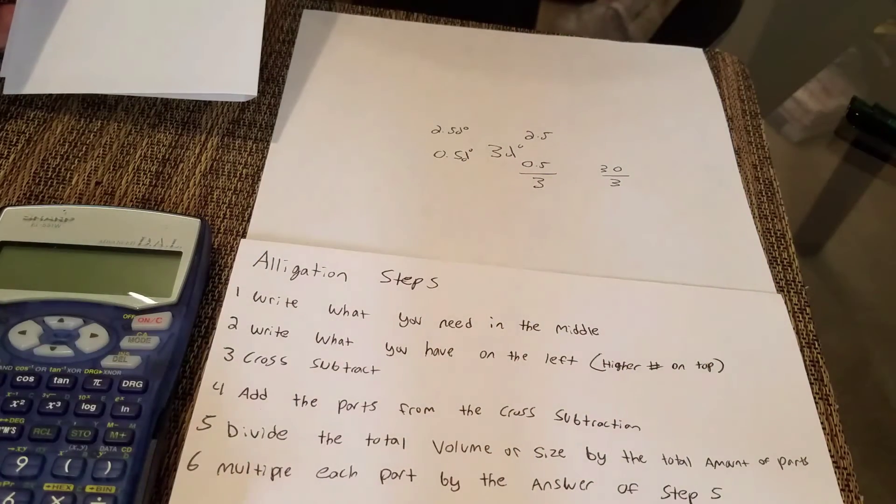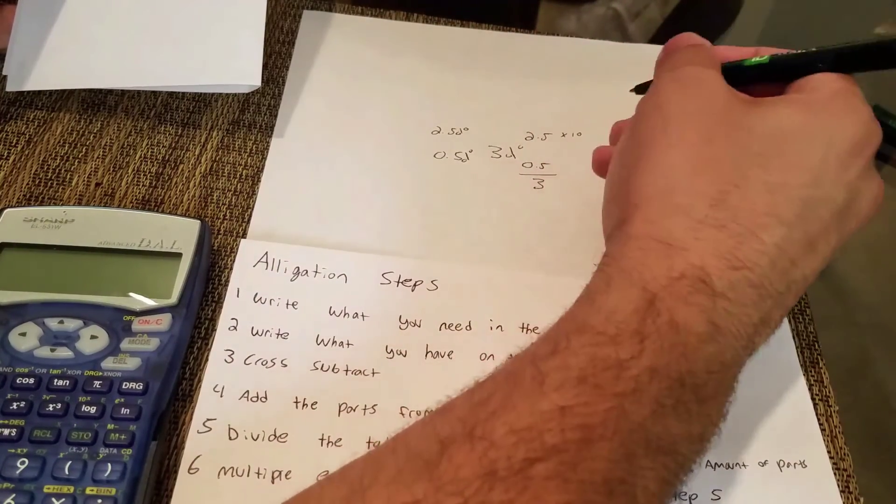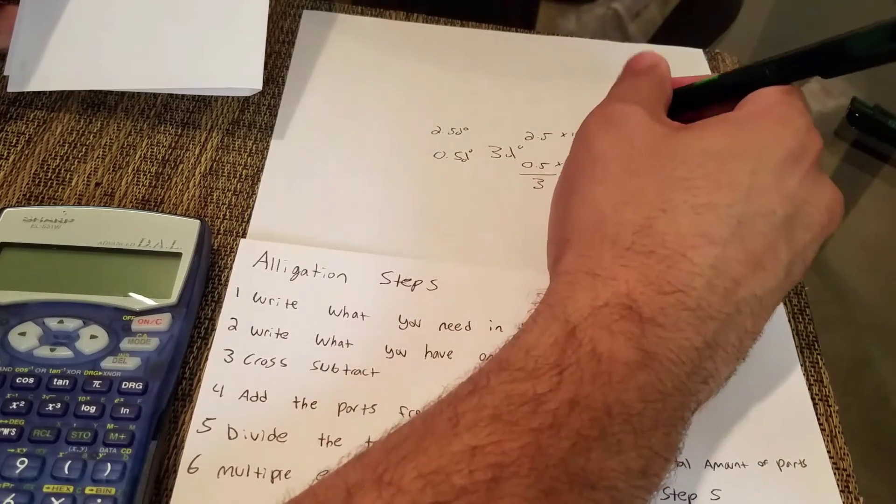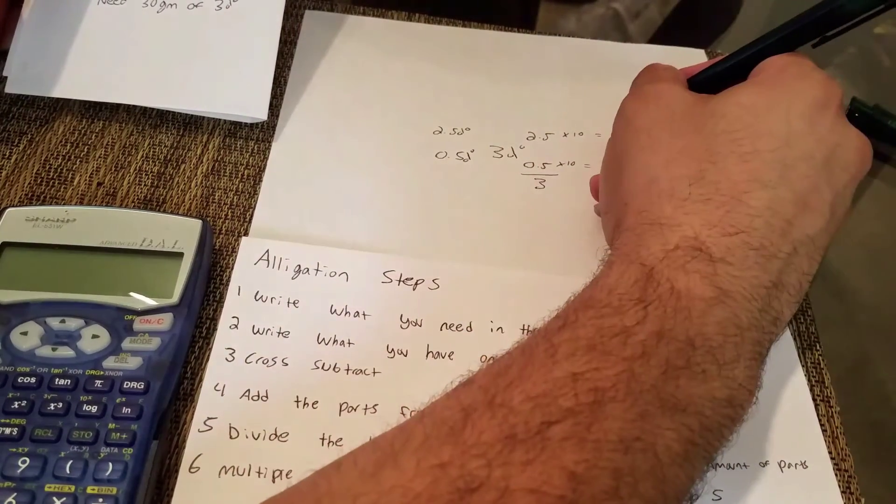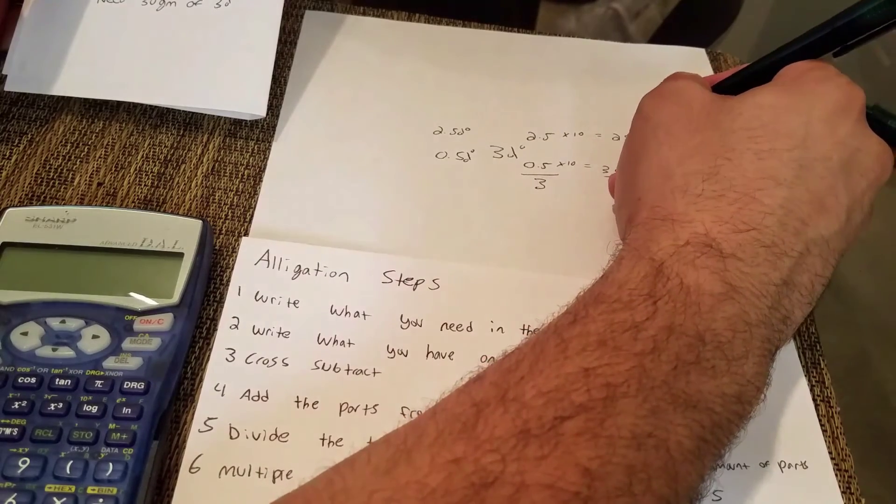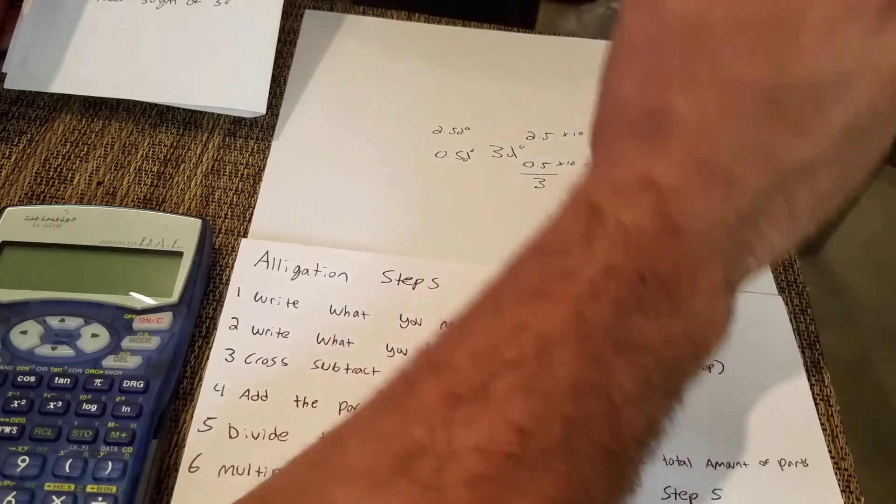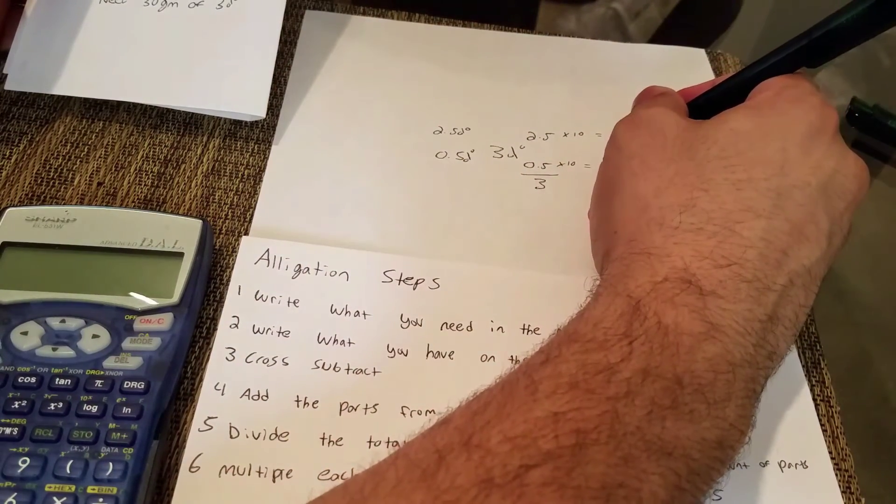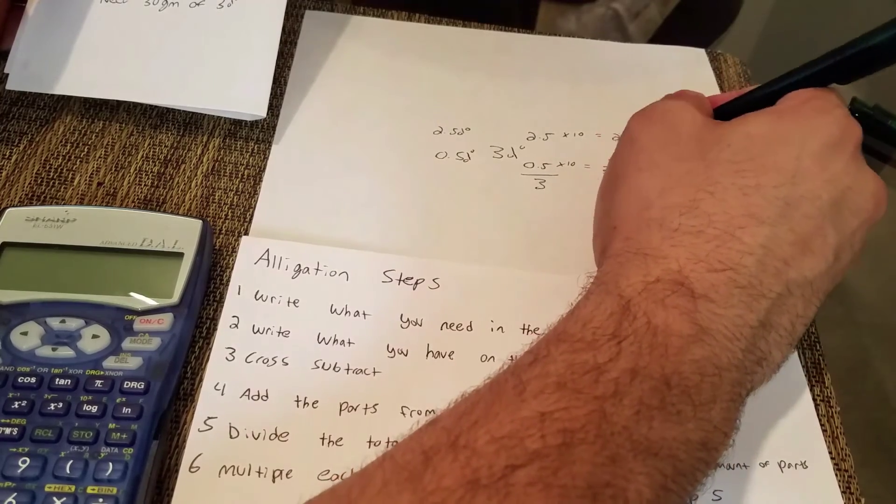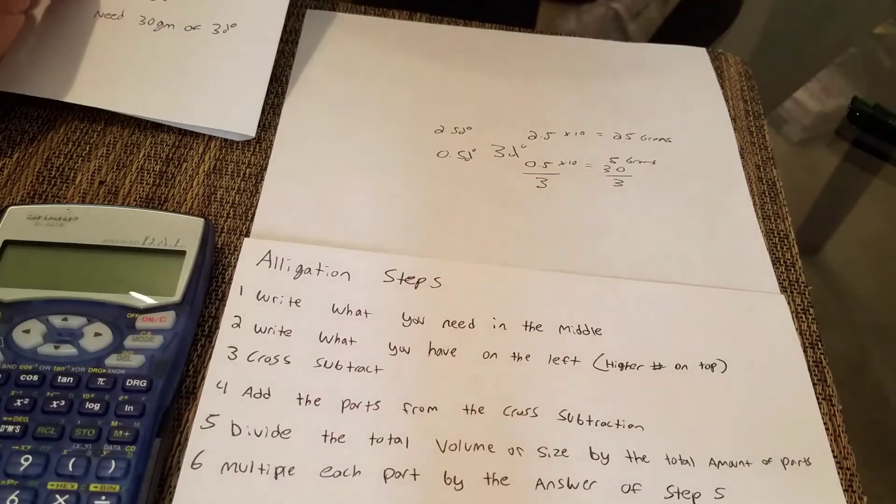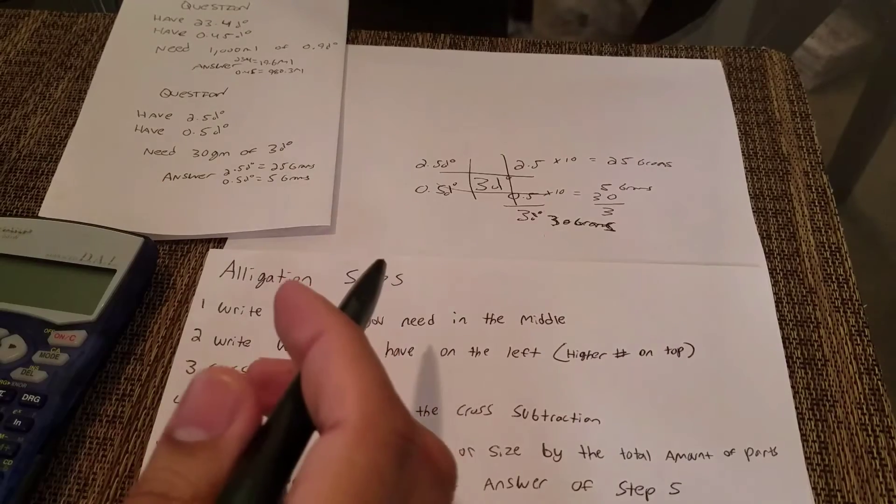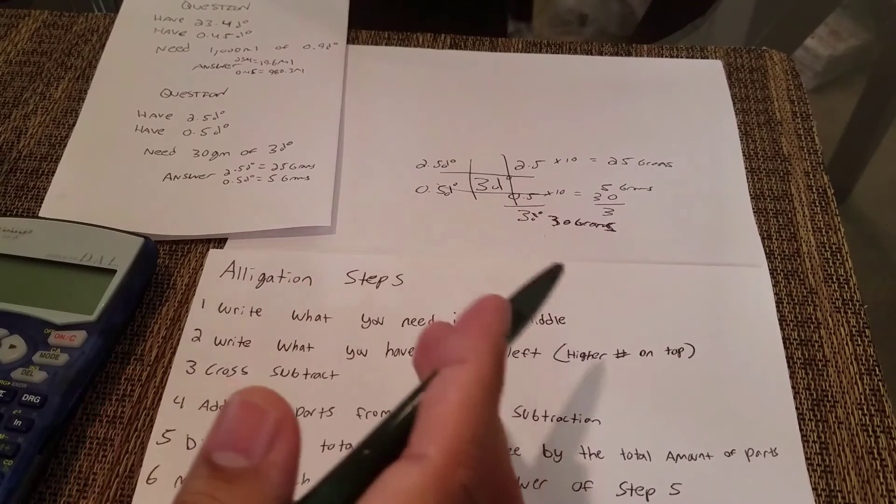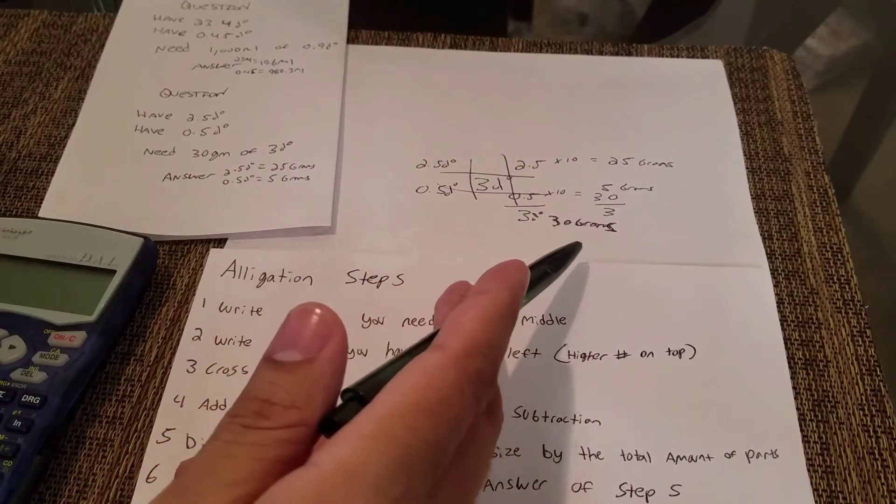The last step here says multiply each part by the answer of step 5. So we're going to put times 10. What we're going to get here is 25 grams - we need 25 grams of 2.5% - and then we're going to get 5 grams of the 0.5%. Let me zoom in for you guys. All right, so that's it. The 2.5% you need 25 grams of that, and the 0.5% you need 5 grams of that, and that will give you the 3% in 30 grams.